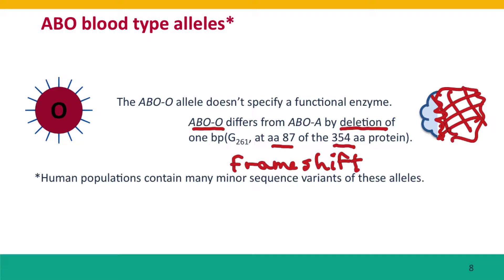There are many other alleles and many other loci affecting blood type, and there are many minor variations of the ABO alleles. These are important in particular medical situations, but we won't be talking about them in the context of this course.